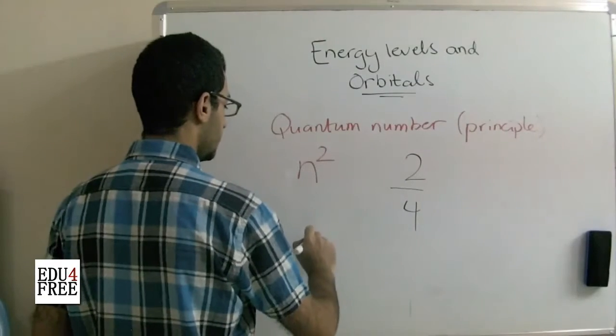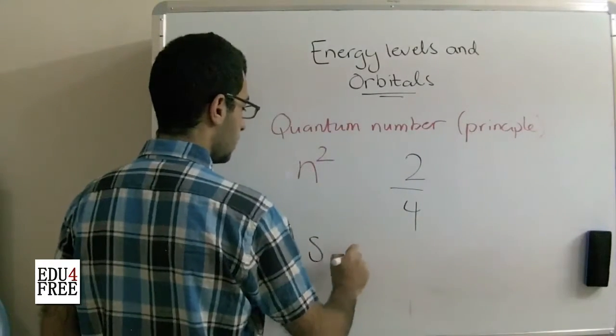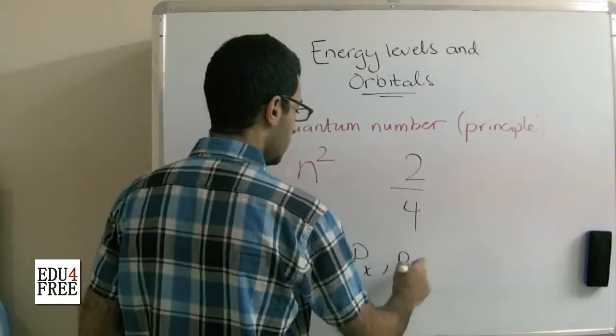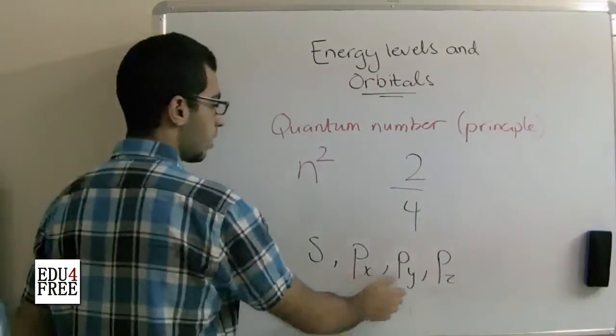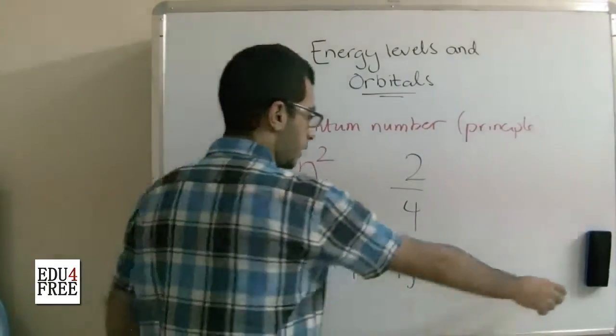So that's because we have the S orbital, we have the P X, P Y and P Z. So these are 4. Let's try another one.